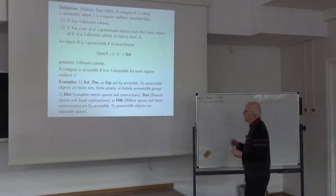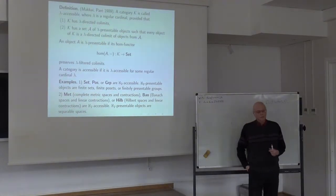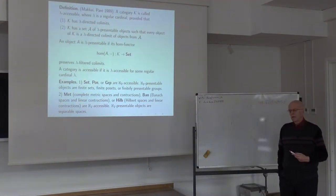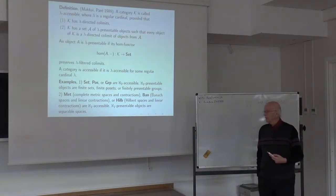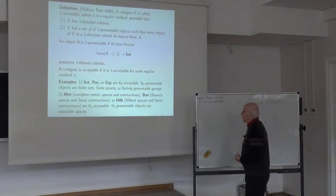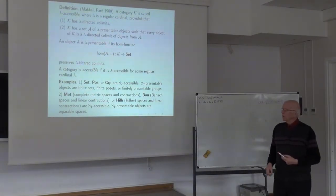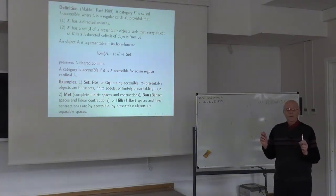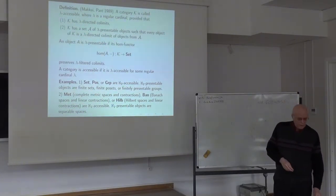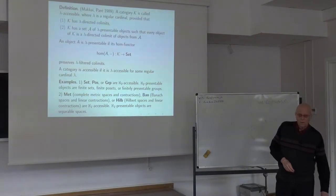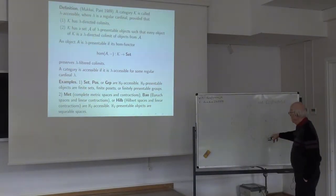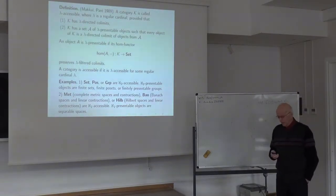This category is Aleph_1-accessible, and the Aleph_1-presentable objects are not merely countable spaces but countably generated spaces — those having a countable dense subset. Since everything is determined by the dense subset via limits of sequences, separable spaces are the Aleph_1-presentable objects. The same situation holds for Banach spaces with linear contractions — Aleph_1-presentable objects are separable Banach spaces. With Hilbert spaces it is even more transparent: separable Hilbert spaces have a countable orthonormal basis. All these categories are Aleph_1-accessible.